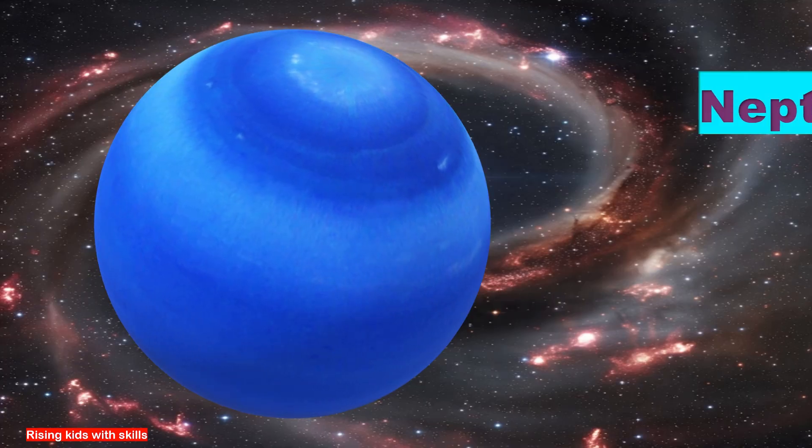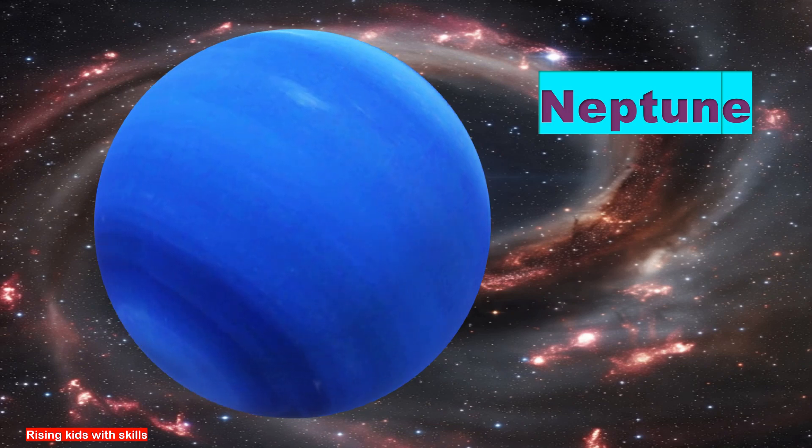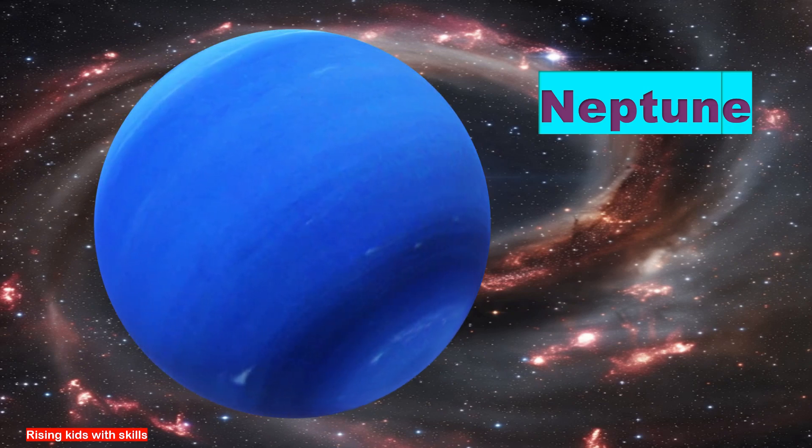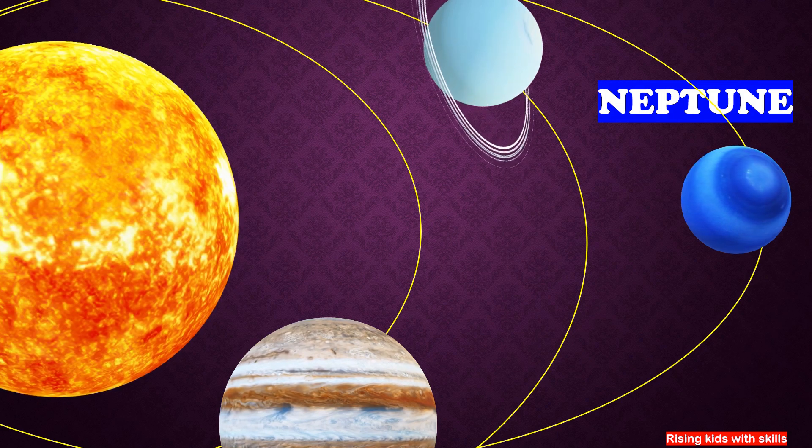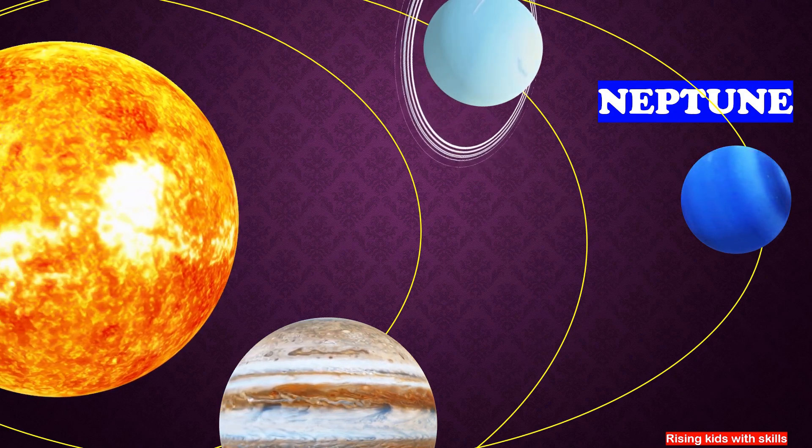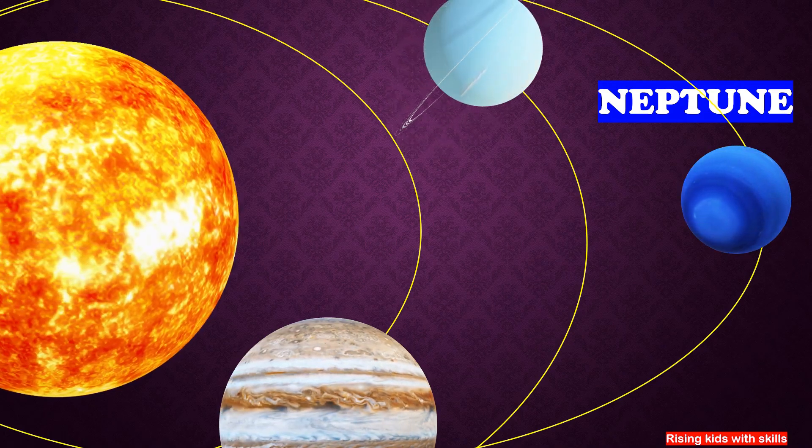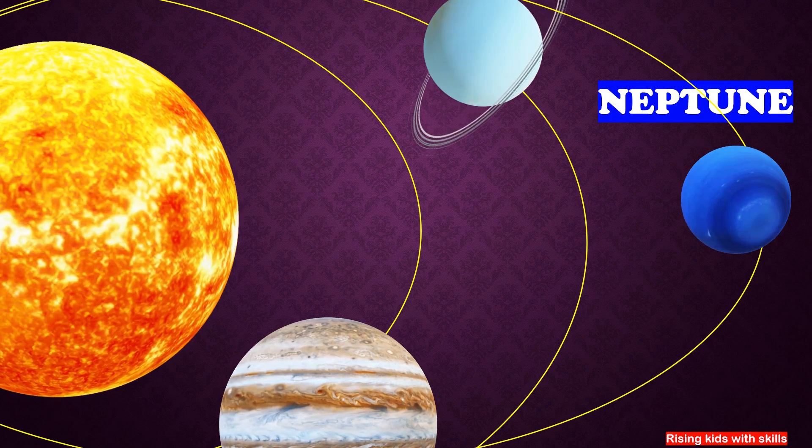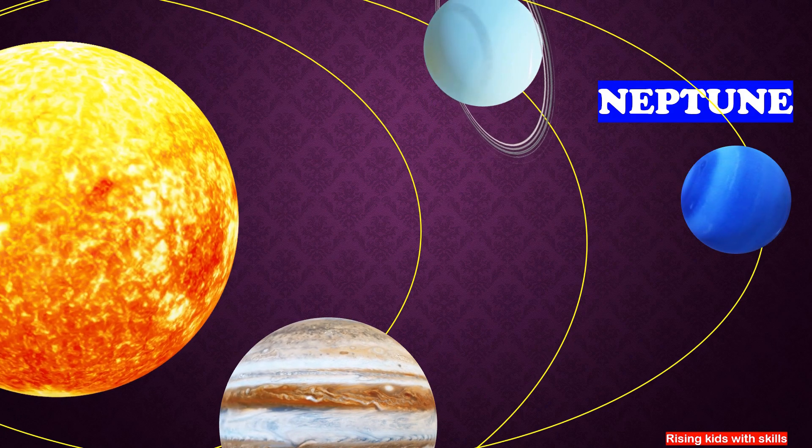This is Neptune. It is the eighth and the farthest planet from the Sun in our solar system. It is known for its deep blue color caused by the presence of methane in its atmosphere. Neptune is approximately 4.5 billion kilometers away from the Sun. Neptune takes 164 years to complete one revolution around the Sun. Sunlight takes about 4 hours to reach Neptune.